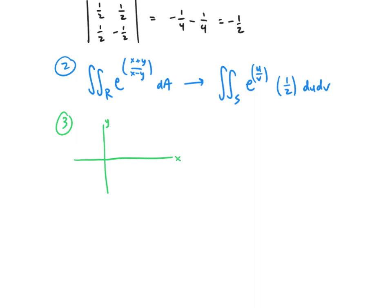So (1, 0), and (2, 0), and (0, -2), and (0, -1). So we have this trapezoidal region down here.